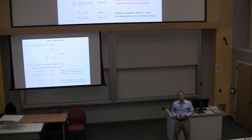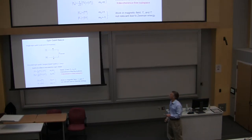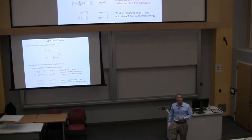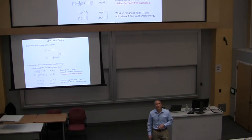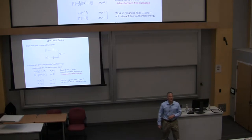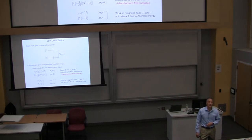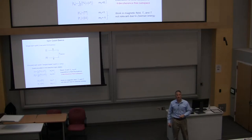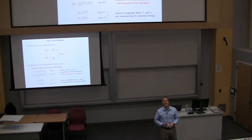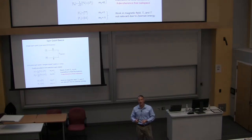How big is your Zeeman splitting? The Zeeman splitting is about 58 micro-eV per Tesla — that's the Bohr magneton. For g equals 2 for an electron in silicon, it's about 120 micro-eV per Tesla. We generally work around half a Tesla, so we have ESR frequencies in our systems in the 20 gigahertz range. It's not optical for our system — it's all microwave — which is convenient because you can just pipe signals in with coax cables.